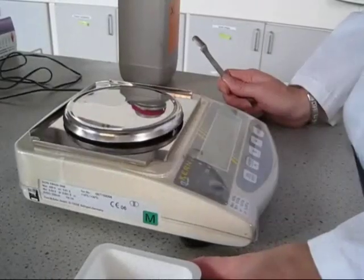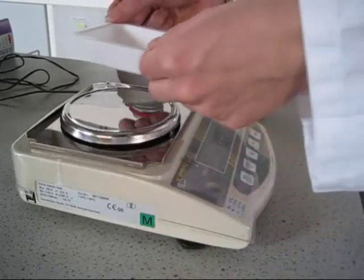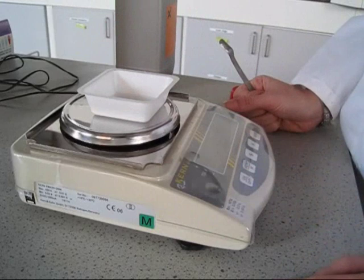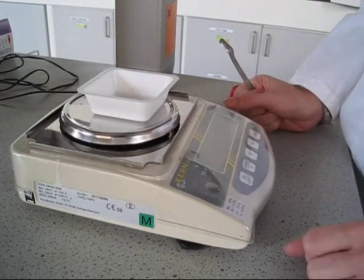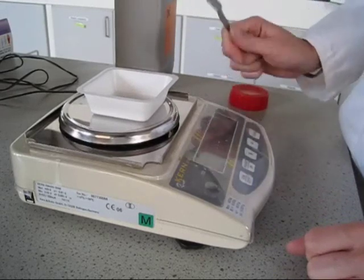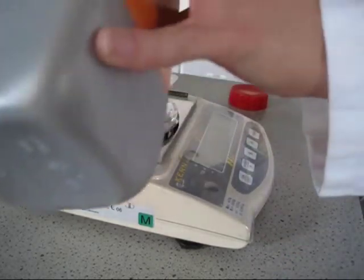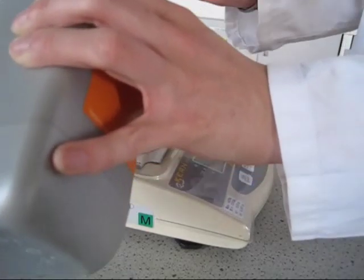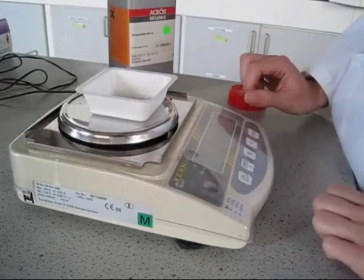In order to weigh something accurately on a top pan balance, first of all take your weighing boat, place it on the balance, press tare. This will minus the weight of the weighing boat. You can then weigh your solid in the weighing boat and you have your accurate weight.